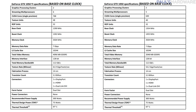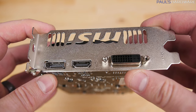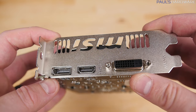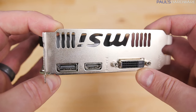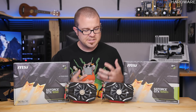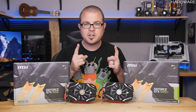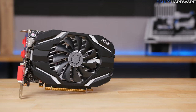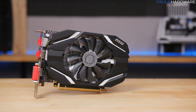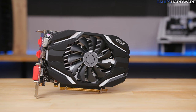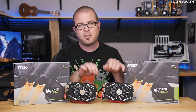Pascal uses a 14-nanometer manufacturing process with 3.3 billion transistors on the GP107. For display outputs, both cards offer one DisplayPort, one HDMI, and one dual-link DVI — a nice variety for a card of this caliber. One major benefit of these lower-power cards is that they only draw 75 watts, which is the same amount delivered natively through the PCIe bus, so neither card requires supplemental power connectors.